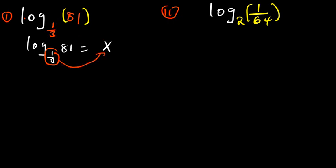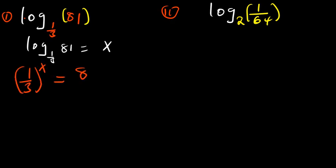So, 1 over 3 in brackets raised to the power x is equal to 81. Now, at this point, I can solve this. 1 over 3 is basically the same as 3 raised to the power negative 1.